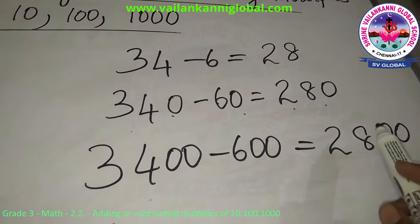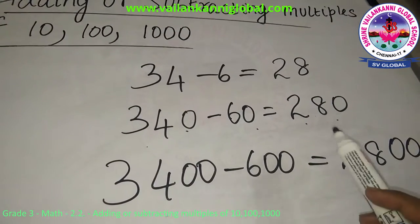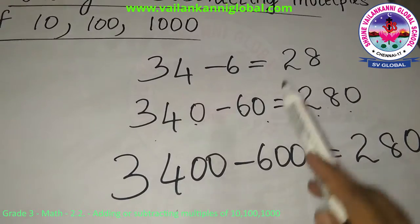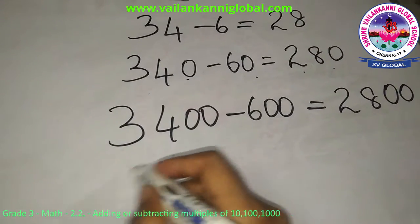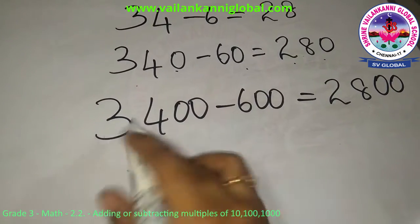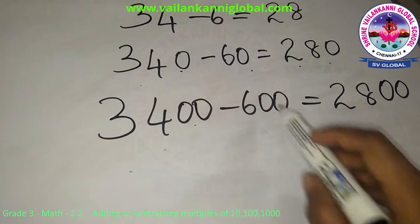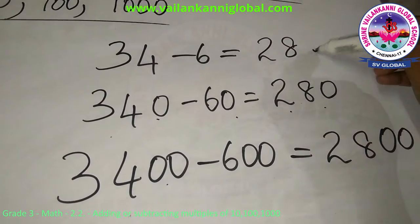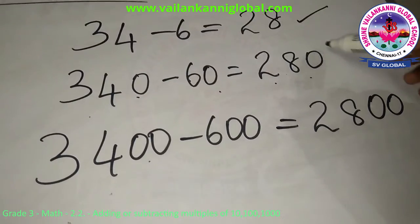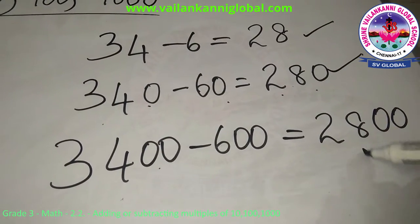So this way you can add or subtract multiples of tens and hundreds and even thousands. So when you are having for 1000 it is 3400 minus 600 which is 2800. This is for tens and this is for hundreds and this is for thousands.